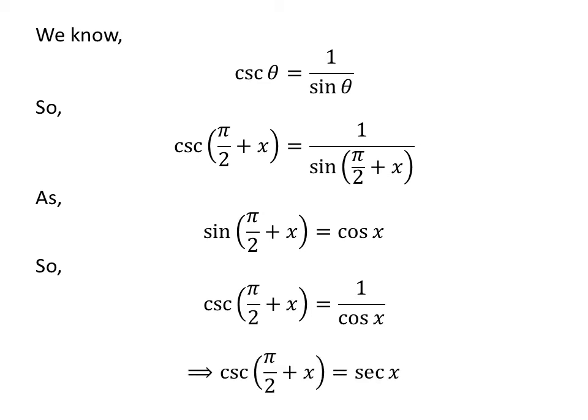We know, 1 upon cosine of x is equal to secant of x. So, cosecant of half of pi plus x is equal to secant of x.